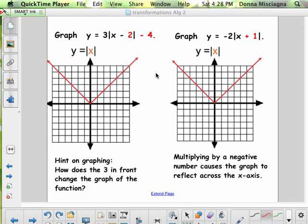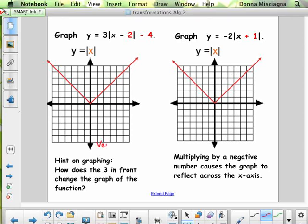The three in front of the operation means we have a vertical dilation by a factor of three. So we're going to multiply all the y values by three.